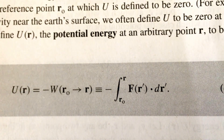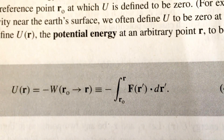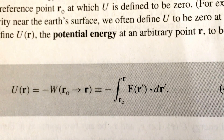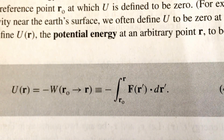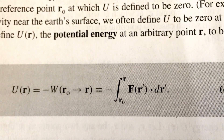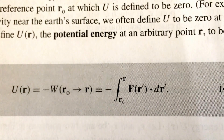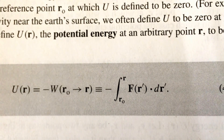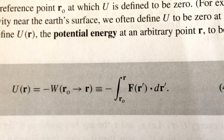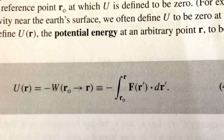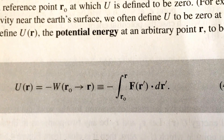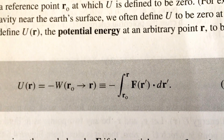The potential energy U(R) is always defined to have a zero point somewhere in space — in this case, our zero point is R-naught. What we're ultimately interested in is changes in the potential energy, and in order to track changes we need some zero point against which we define all of our potential energies.